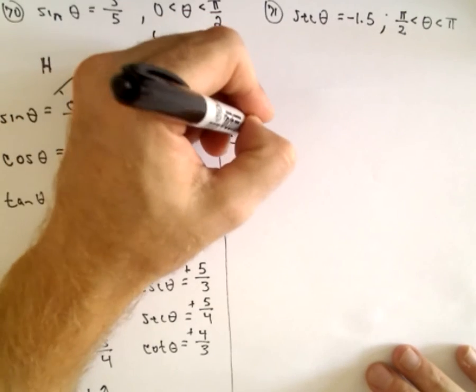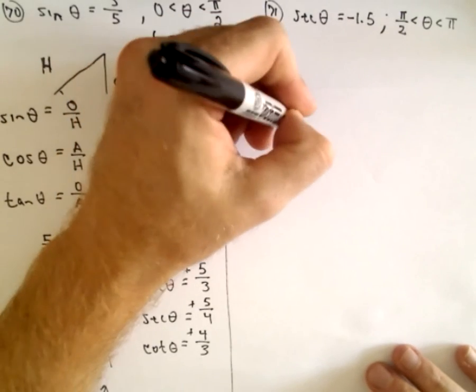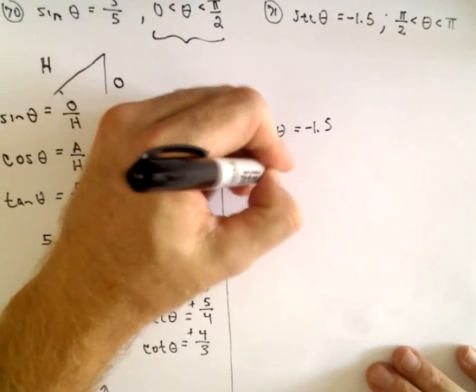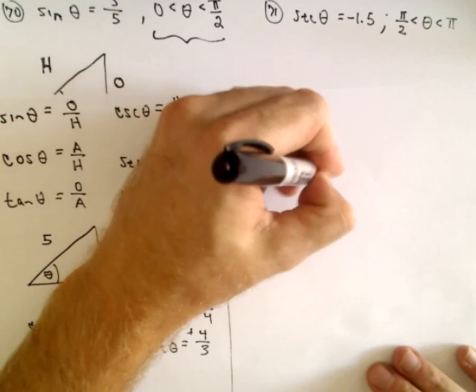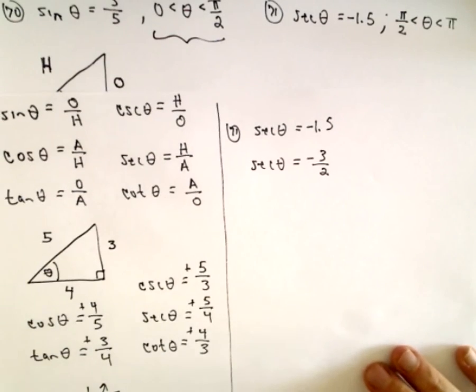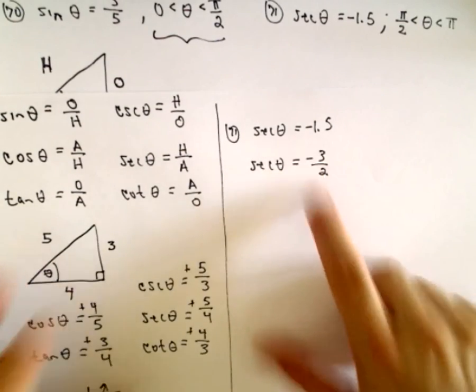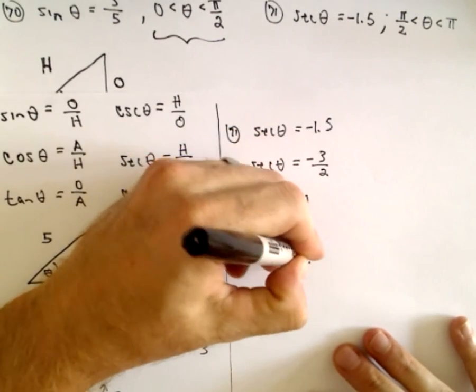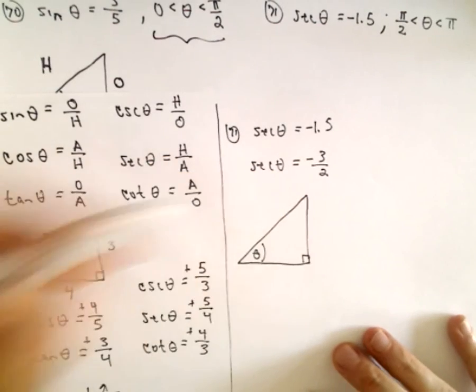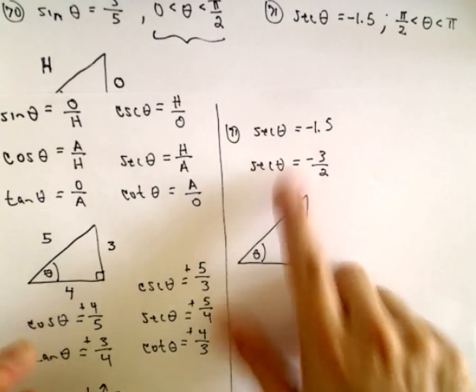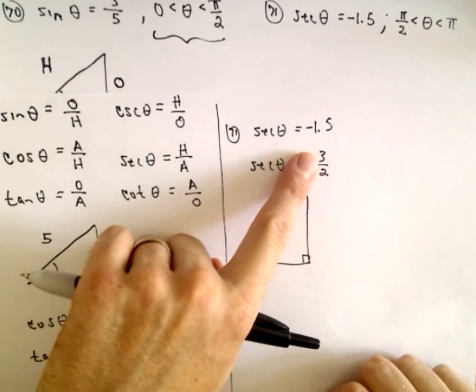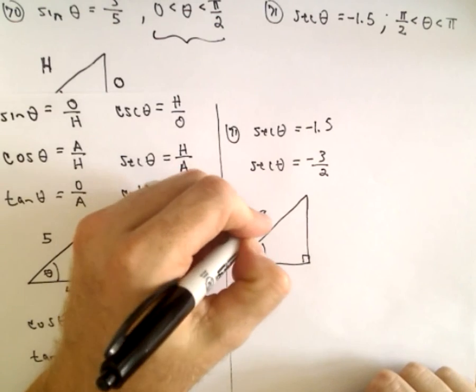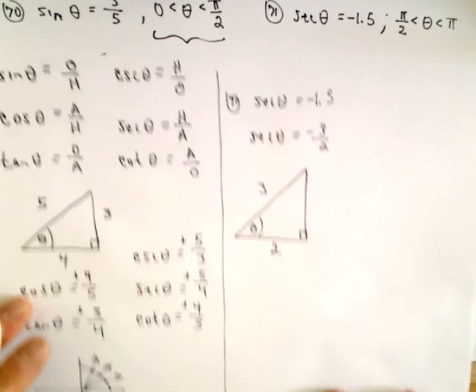For 71, we've got secant of theta equals negative 1.5. I'm going to rewrite that as a fraction, I'm going to write that as negative 3 over 2. So again, I'm going to forget all about the fact that this is negative when I label my triangle. I'm going to come back and worry about the signs at the very end. So it says secant, that's the ratio of the hypotenuse to the adjacent. So that means the hypotenuse is going to have a value of 3, the adjacent is going to be 2.